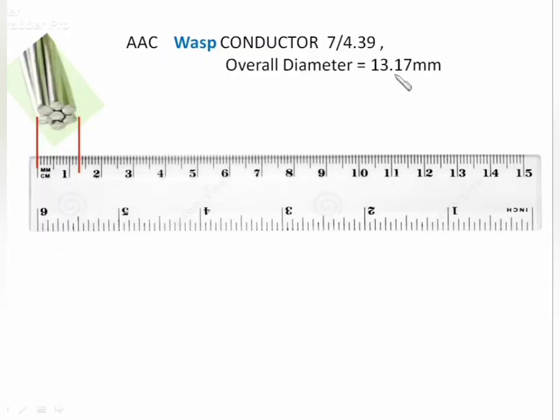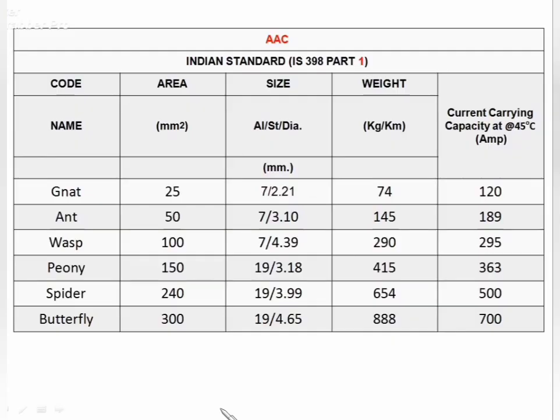If you don't have a precise instrument, you can measure the conductor diameter by scale or any other instrument — end-to-end diameter is to be measured. This is the IS:398 AAC chart — you can pause and see each row.